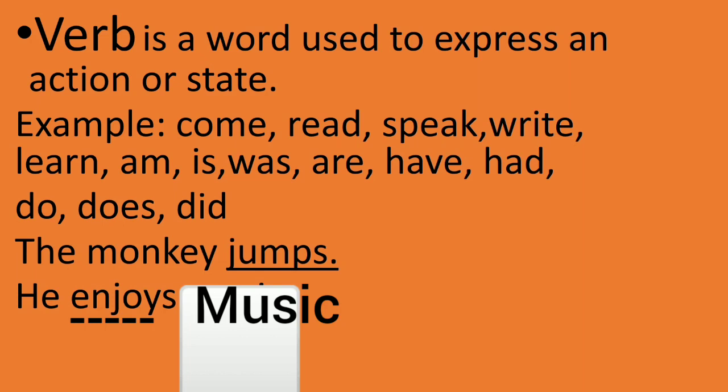For example: 'The monkey jumps.' 'He enjoys music.' In the sentence, verb is the main part. A verb is a kind of word that tells about an action or state. For example, 'I jump up and down.' In a simple sentence, if we say one action word, we can say it is a verb.